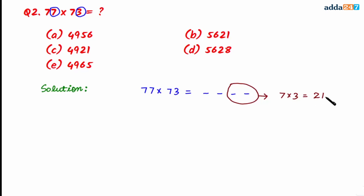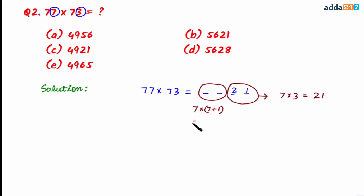For the first two digits, we take the tens digit, which is 7, and multiply it by 7 plus 1, giving 7 multiplied by 8, which equals 56. So the first two digits are 5 and 6, making the answer 5621 — that is option B.